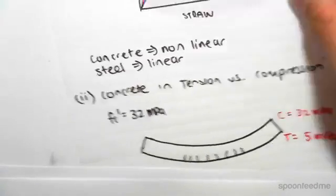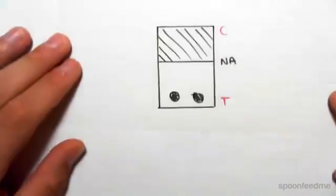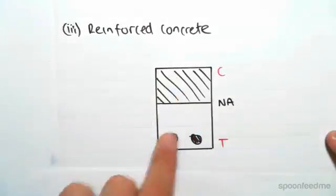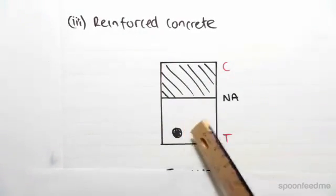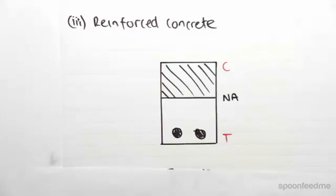So that then brings up the need for something called reinforced concrete. Reinforced concrete would look something like this. Say if we have a section, a rectangular section - now everywhere is concrete except down the bottom we have these bars.